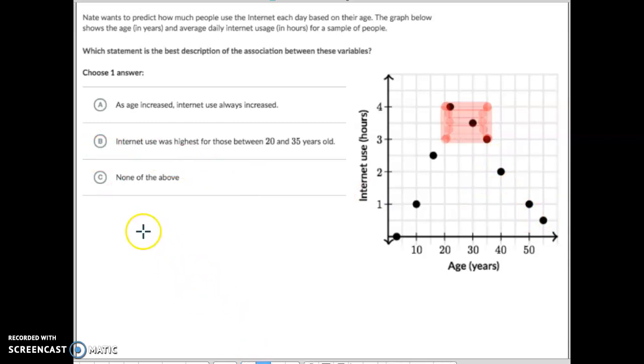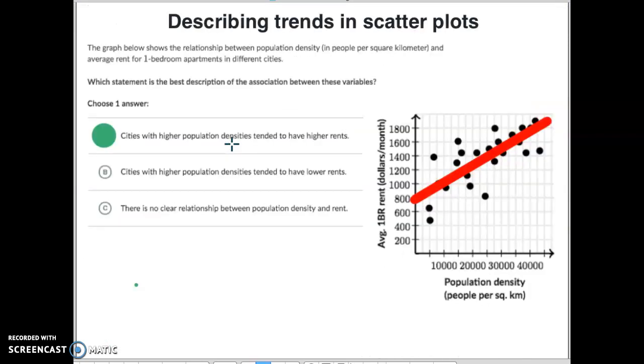You know what? I think I have to create a green dot to do that. So let's do that. Boom. And then the last one says none of the above. Well, I don't think that's true because letter B was true for that. So this is how you're going to be doing describing trends in scatterplots. Not horribly difficult, but if you need my help, I'm here for you. Have a great day, guys. Bye-bye.